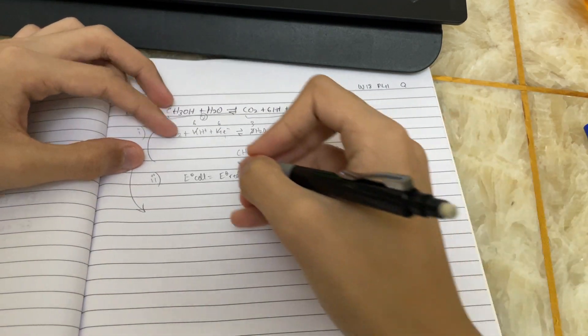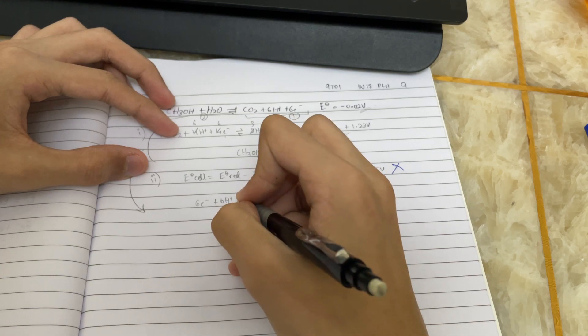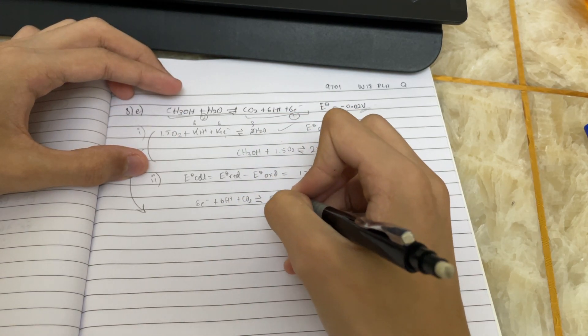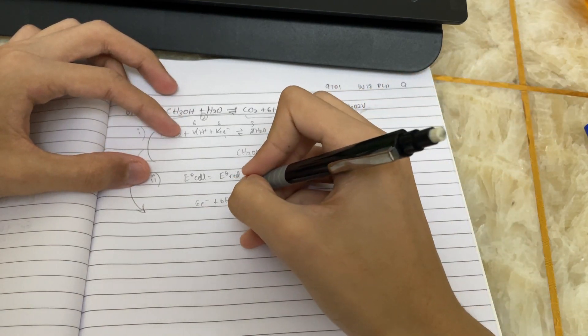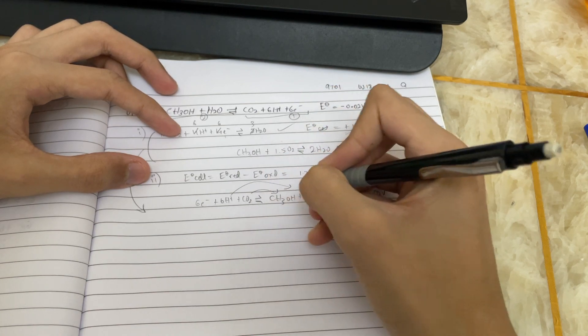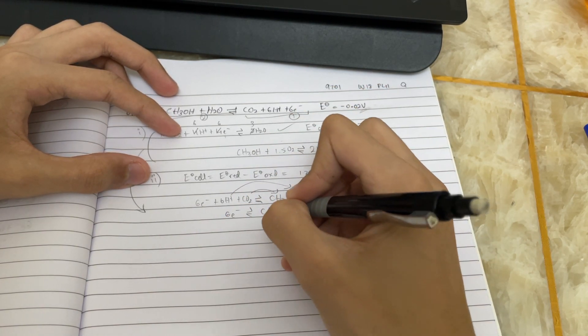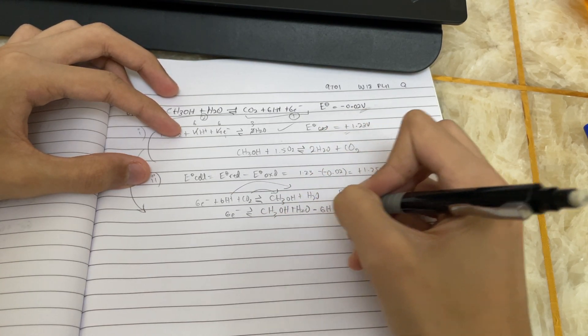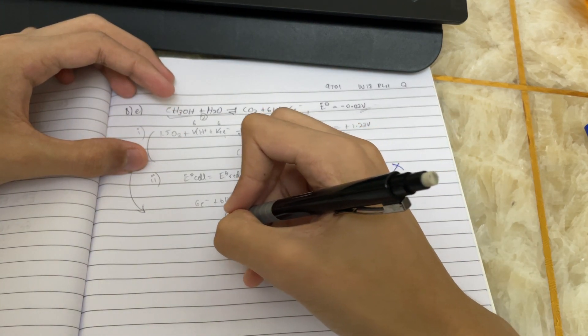Well, for clarification, I'll write it down. 6e- plus 6H+ plus CO2, which gives CH3OH plus H2O, right? And now you make this electron the subject, moving them to the right-hand side, minus would give you CH3OH plus H2O minus 6H+ minus CO2. This equation, you plug it in here.